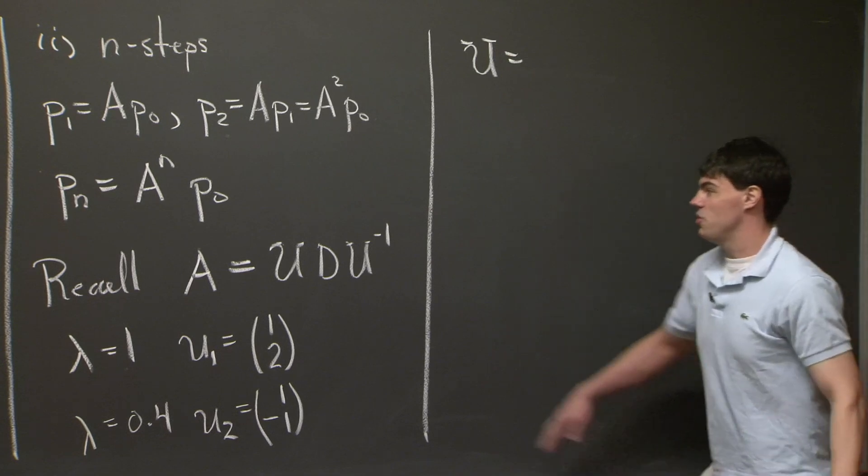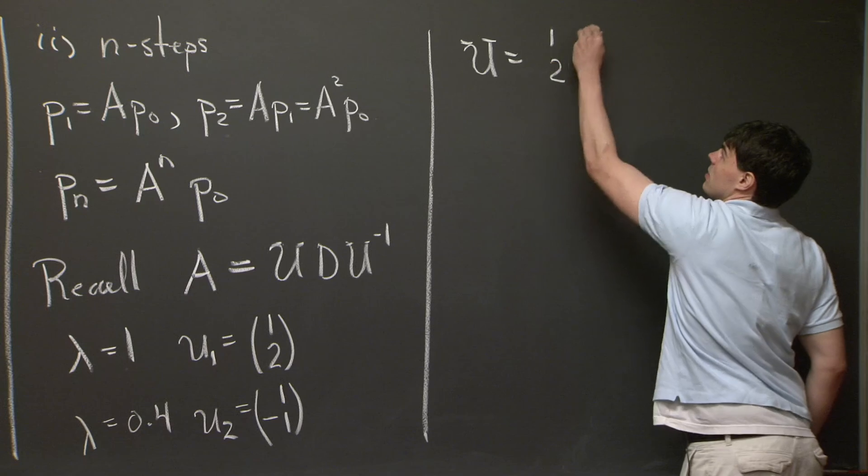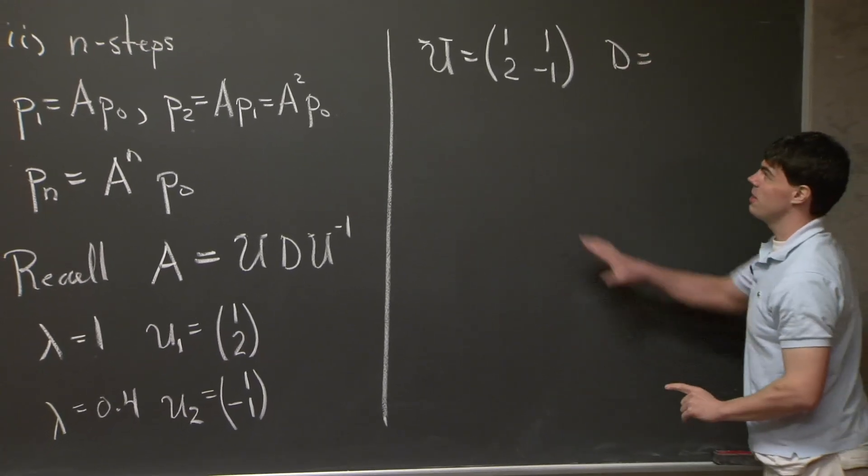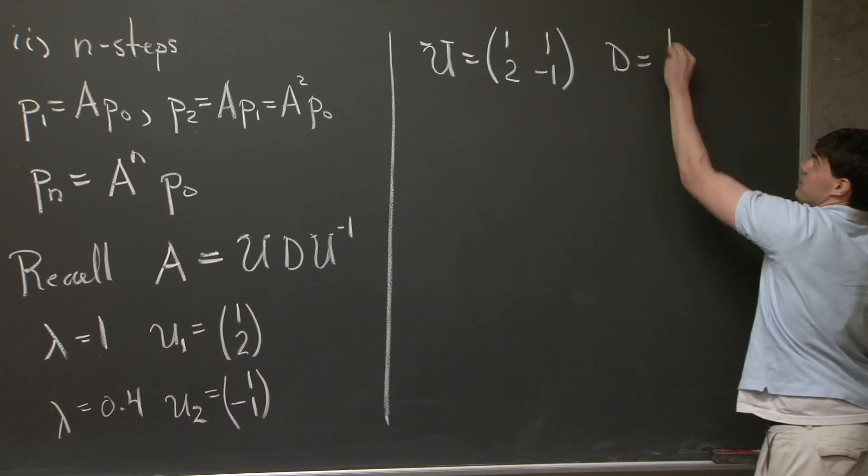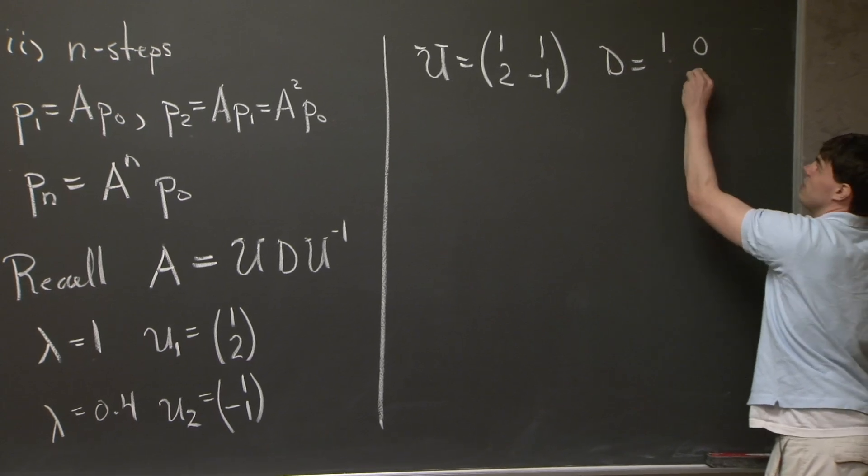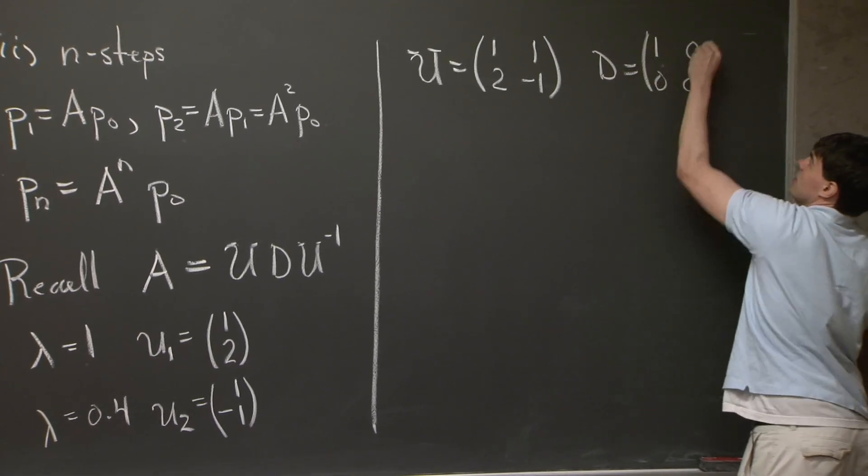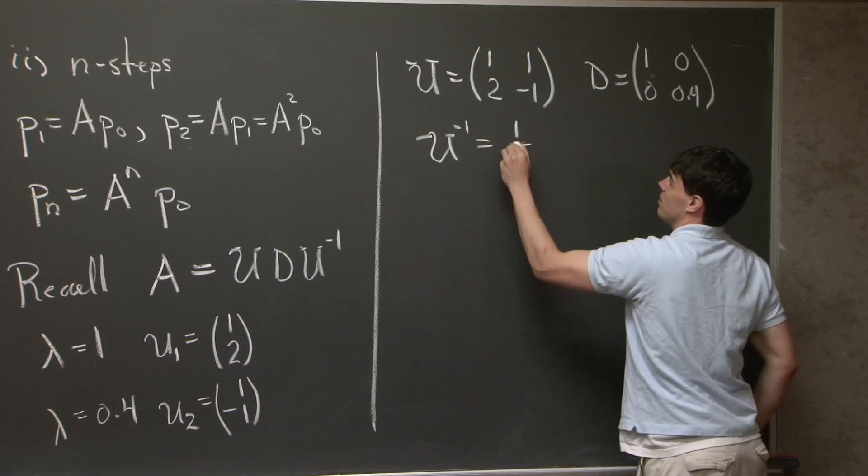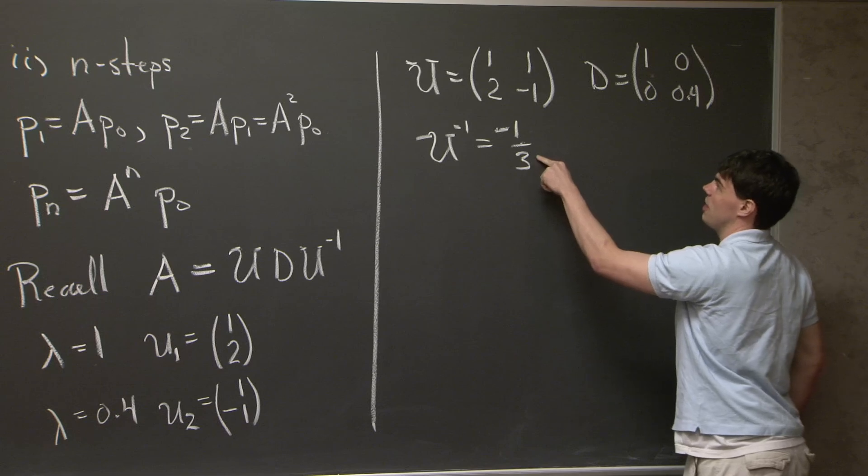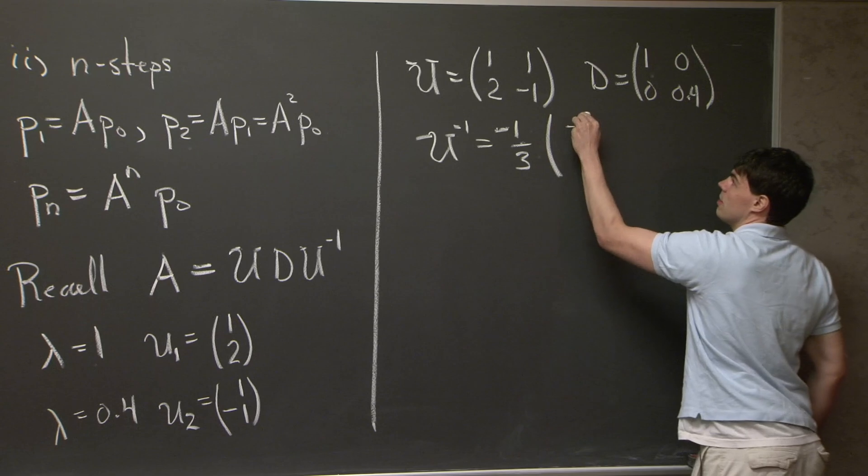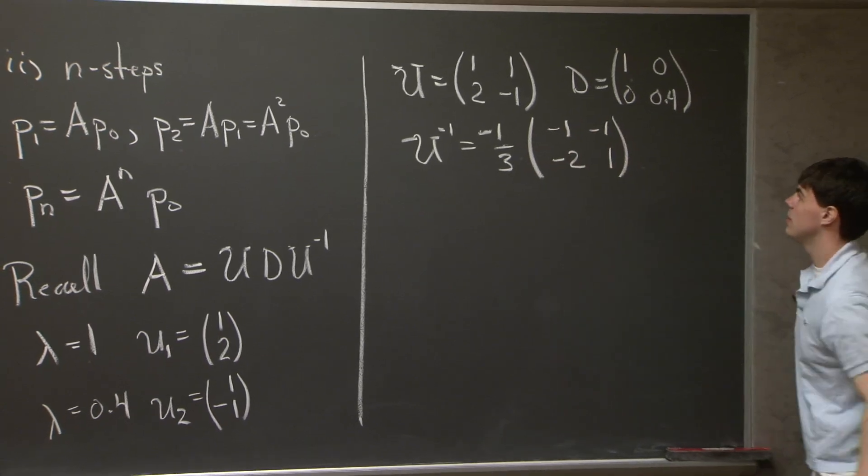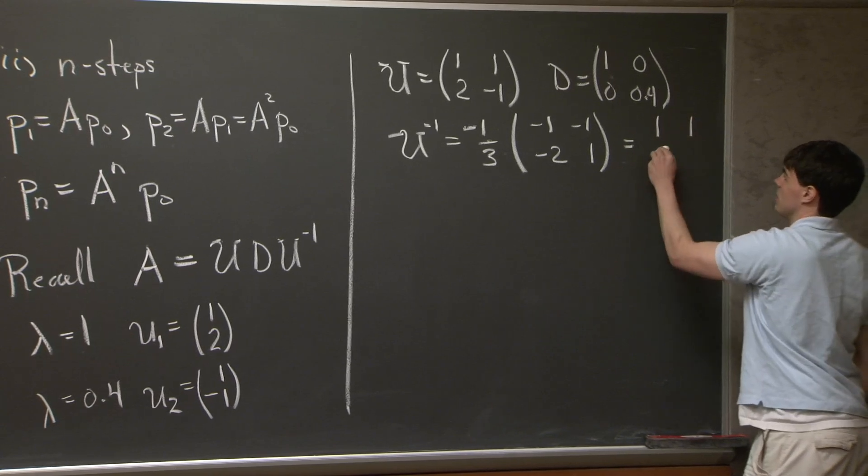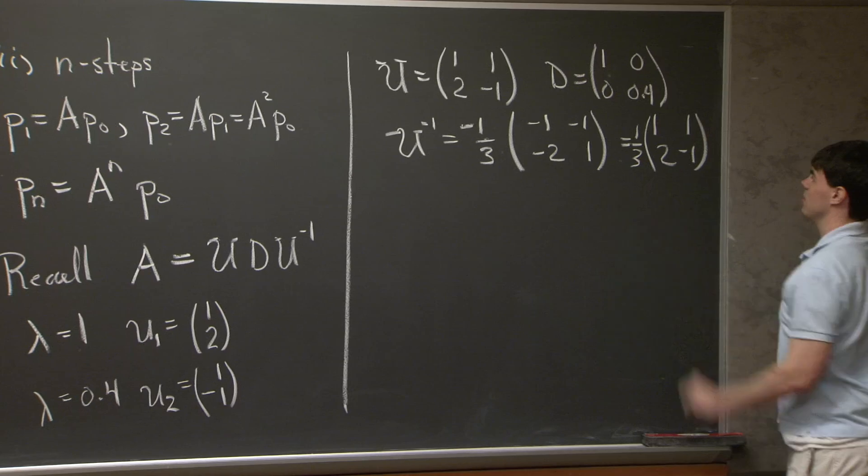OK, we can now write this big matrix U as 1, 2, 1 minus 1. D is going to be, now I have to match things up. If I'm going to put the first eigenvector in the first column, we have to stick 1 in the first column as well, and then 0.4, like this. And then lastly, we also have U inverse, which I can just work out to be minus 1 third, 1 over the determinant, times minus 1, minus 1, minus 2, and 1, which simplifies to this.